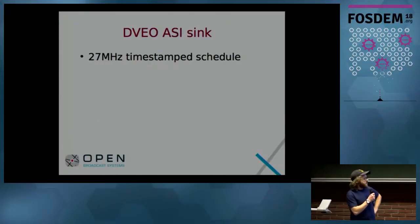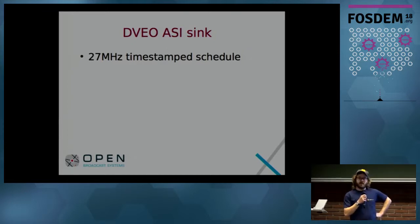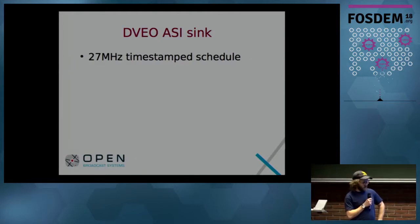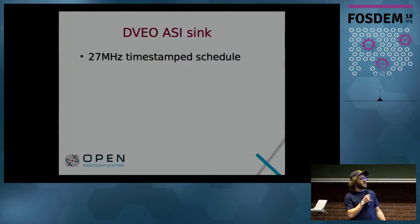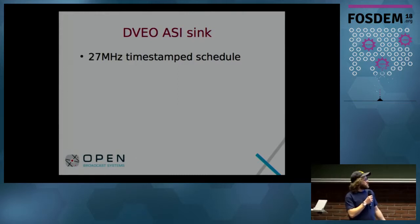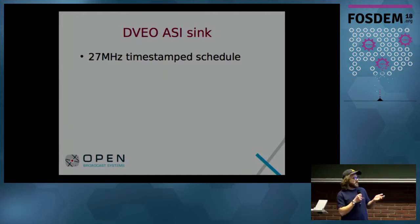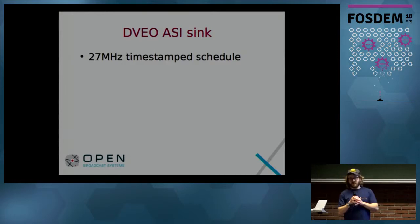We also added the ASI Sync. ASI is a bit like SDI — it's a format for transmitting video. We already had a source module to receive the ASI signal and transmit it as a transport stream. It's designed for MPEG-TS because it uses the same 27 MHz clock.